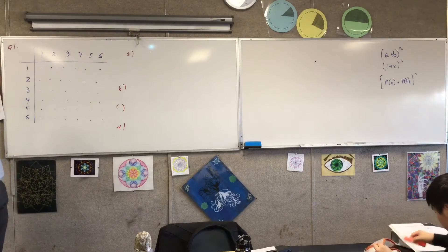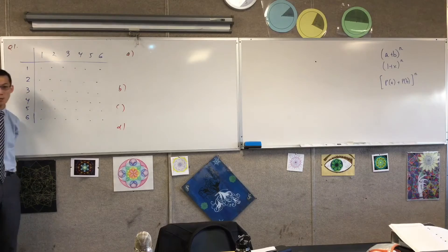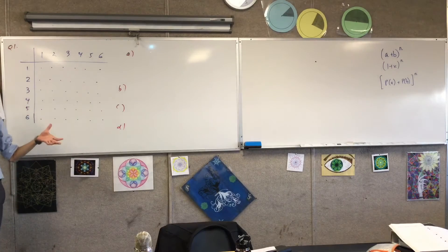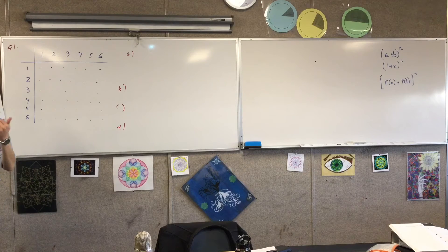You can see the dots give you the sample space, all of the different number of things that could happen. How many different things are there? There are 36, six by six, so that's not too hard.